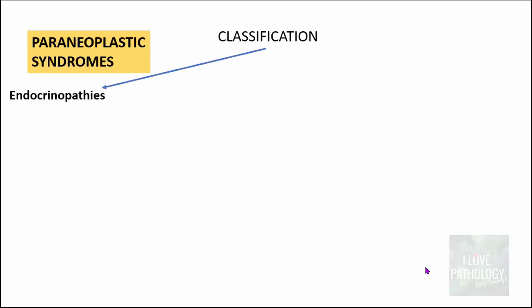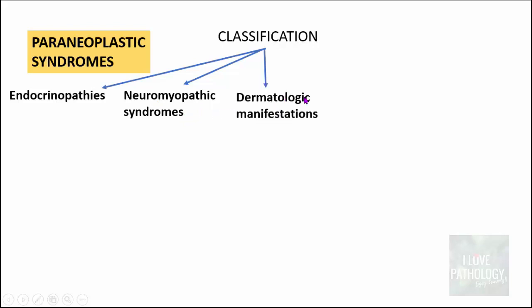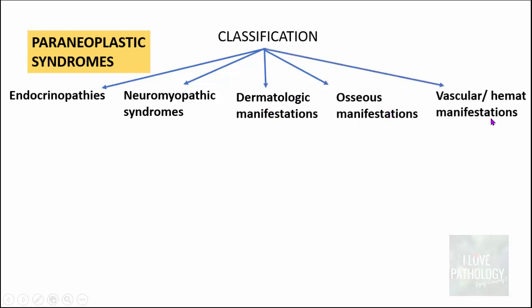Paraneoplastic syndromes can be classified into five categories: endocrinopathies, neuromyopathic syndromes involving muscles and nerves, dermatologic manifestations, osseous or bone manifestations, and vascular or hematologic manifestations.